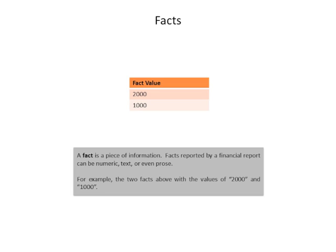A fact is a piece of information. Facts reported by a financial report can be numeric, text, or prose. In this slide, you can see two facts: 2,000 and 1,000.